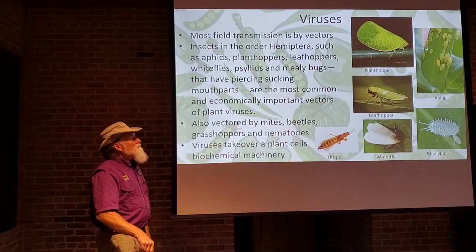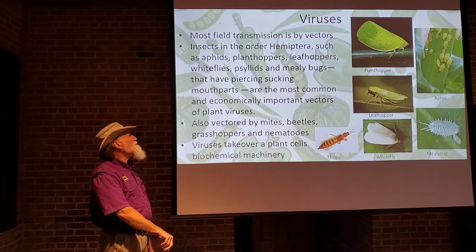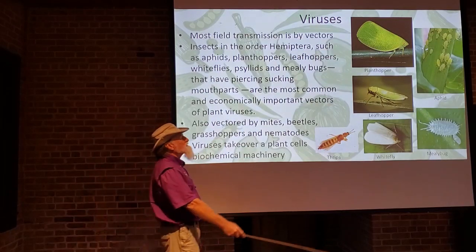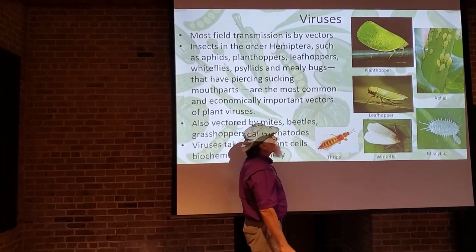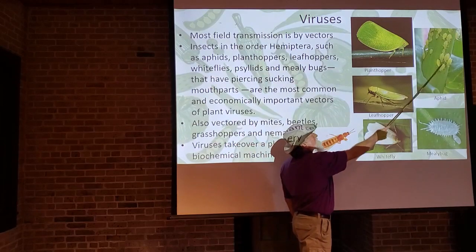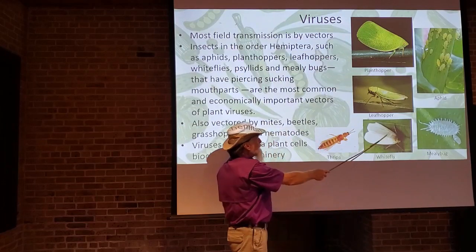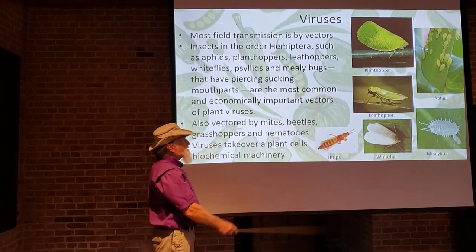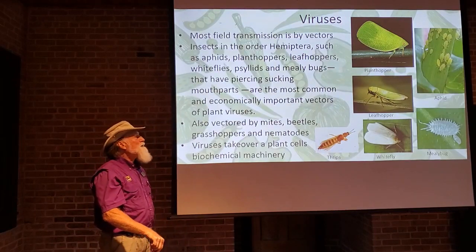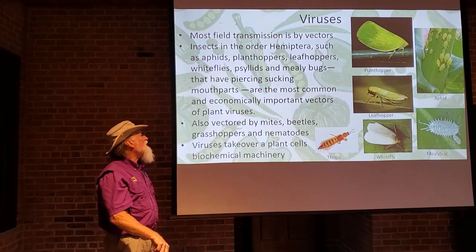Most of these insect vectors have piercing, sucking mouthparts — the Hemiptera. Examples include plant hoppers, leaf hoppers, aphids, mealybugs, whiteflies, and thrips. Remember all these from our study on entomology — they have piercing, sucking mouthparts and are often vectors of plant viruses.